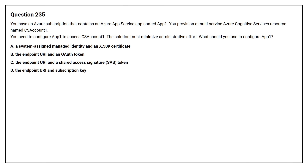Question number 235. You have an Azure subscription that contains an Azure App Service app named App1. You provision a multi-service Azure Cognitive Services resource named CS Account 1. You need to configure App1 to access CS Account 1. The solution must minimize administrative effort. What should you use to configure App1? Option A: a system-assigned managed identity and an X.509 certificate.